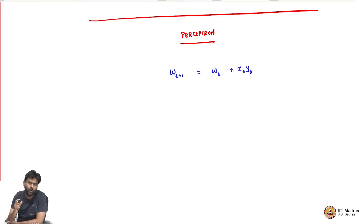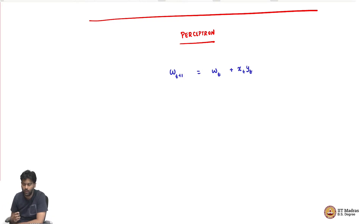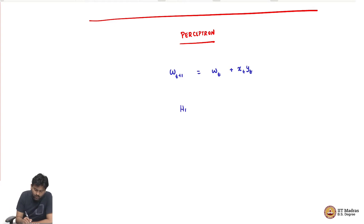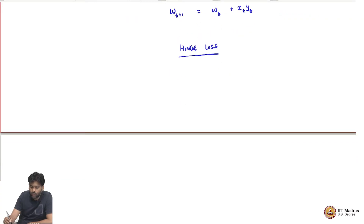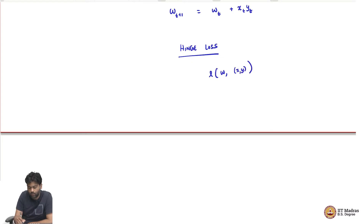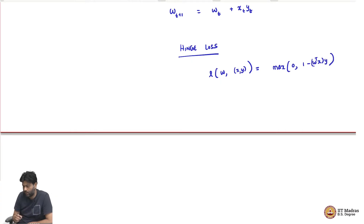In gradient descent, you have a guess for the current parameter of interest and then you take a negative gradient step. That is a gradient update rule that people typically use. Now if you use a hinge loss - let us think of using a hinge loss. Hinge loss is something we discovered from SVMs: the loss of a particular W for a given data point x, y is just max of 0, 1 minus W transpose x times y. This is the hinge loss.